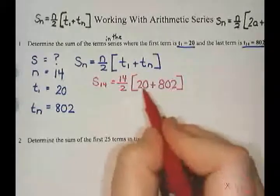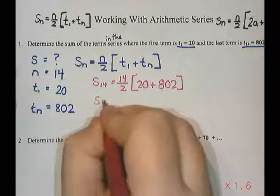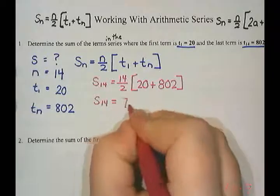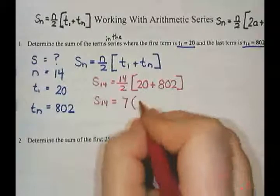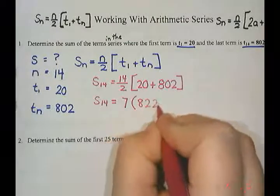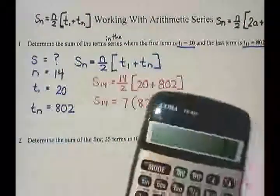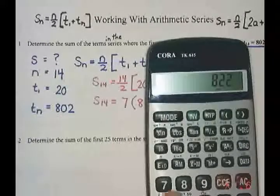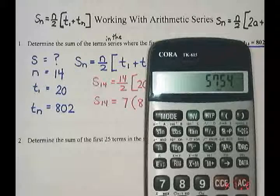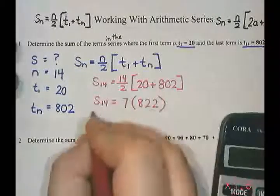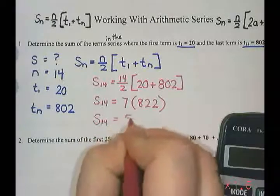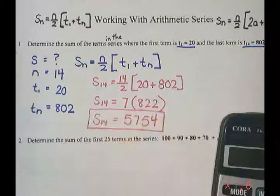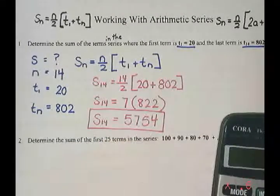Now I'm going to use BEDMAS and do my brackets first. Although I can do a little dividing here outside. So 14 divided by 2 is 7, and 20 plus 802 is 822. And then 822 times 7 is 5754. So the sum of the first 14 terms is 5754.